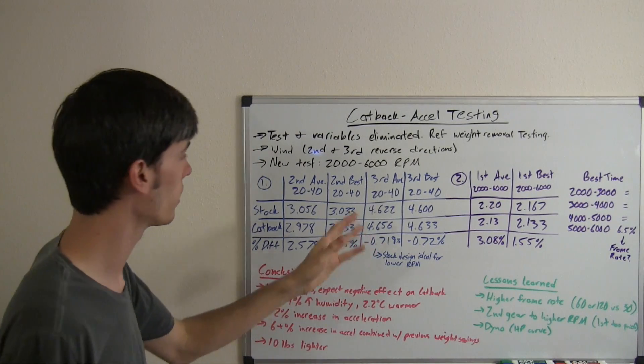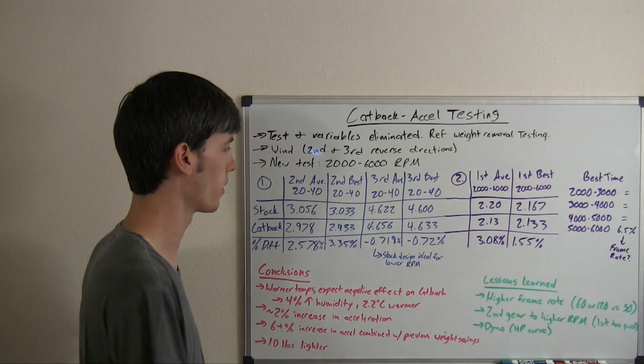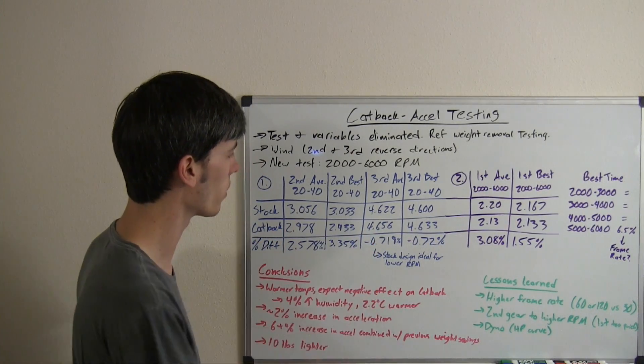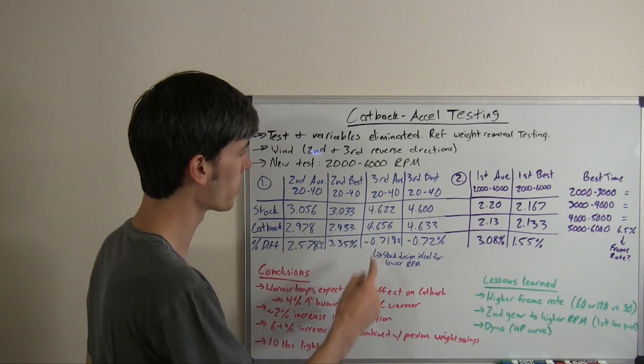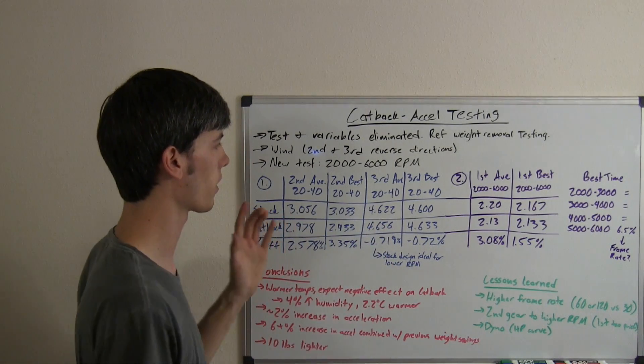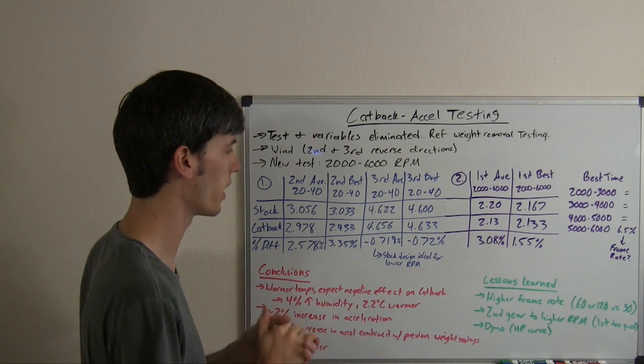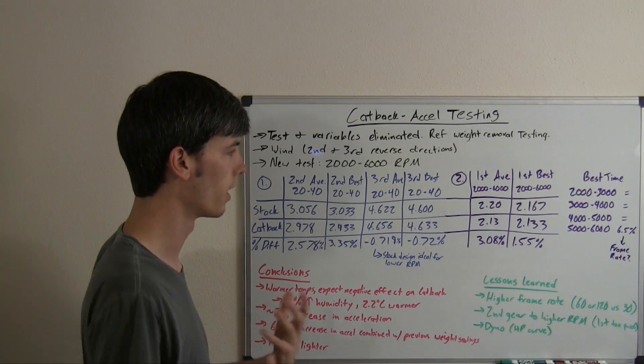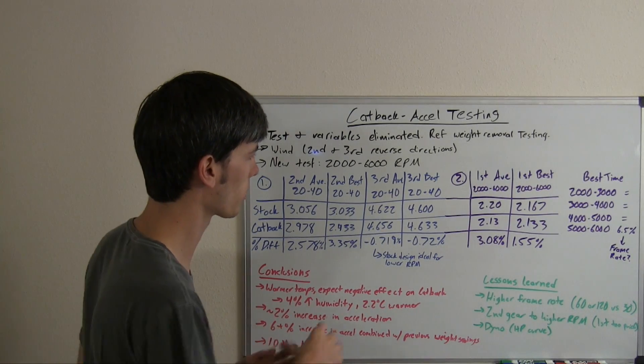As you can see from the results there, the stock exhaust was actually quicker than after installing the cat-back, even though the cat-back is also 10 pounds lighter. We've got 4.622 for the stock versus 4.656 for accelerating in third gear from 20 to 40 miles an hour. A difference of negative 0.72%, so negative 0.27% decrease in acceleration.